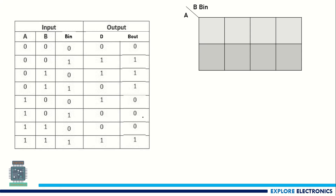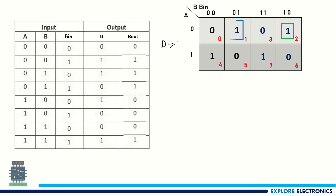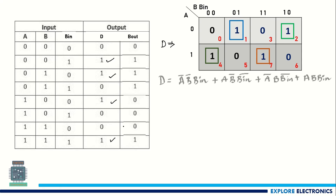For this truth table, if we write the expression for D using K-map simplification, we place 1 wherever D is 1 and start grouping. There are four 1s in D, and grouping them gives: D = A_bar·B_bar·B_in + A·B_bar·B_in_bar + A_bar·B·B_in_bar + A·B·B_in.